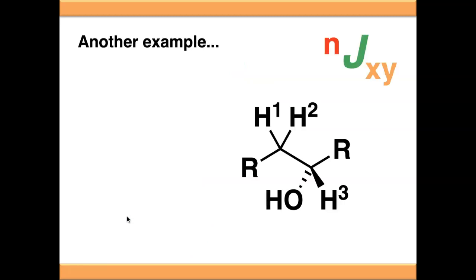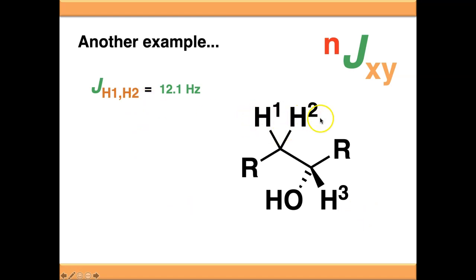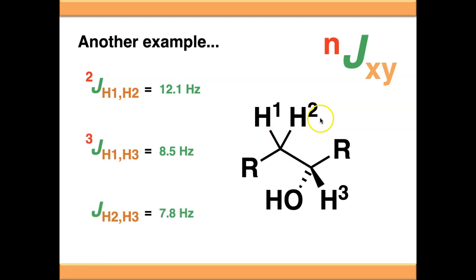One final example: looking at this system and notating all three couplings occurring. H1 to H2 is across 1, 2 bonds, so this is a ²J coupling. H1 and H3 are 1, 2, 3 bonds apart, so this is a ³J coupling. H2 and H3 are also coupling through three bonds, so that's also a ³J coupling. You'll see couplings notated this way in chemical research papers and synthetic chemistry papers everywhere.